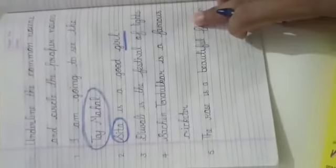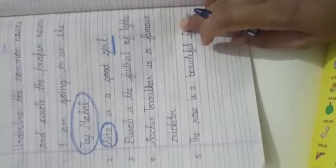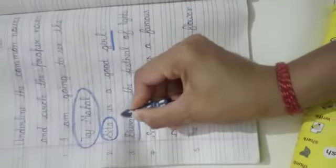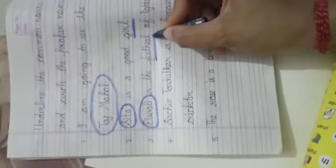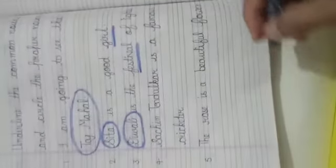Next is 'Diwali is the festival of lights.' So Diwali is a special festival. It is a proper noun. We will circle it. And festival, that is a common noun. Festival means can be any festival.